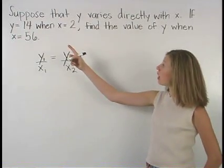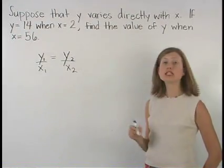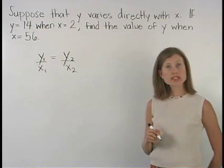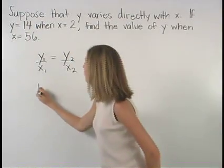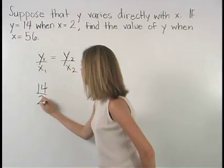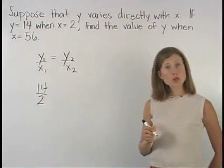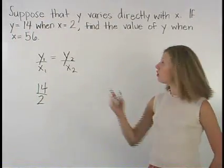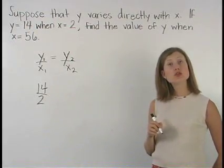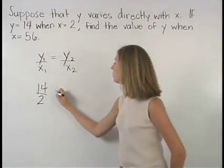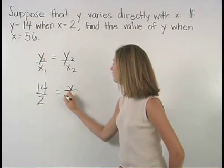Here, we know that Y equals 14 when X equals 2, so one set of coordinates will be 14 and 2. We want to know the value of Y when X is equal to 56, so the other coordinates will be Y and 56.